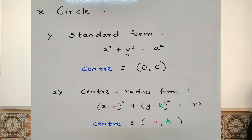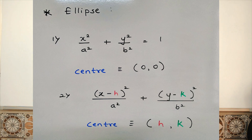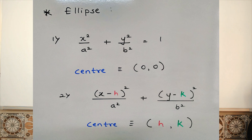We all know the center of a circle in the standard form is (0, 0), right? Then the center of a circle in the center-radius form is (h, k). In case of an ellipse, the center in the standard form is (0, 0), and the center in the form (x−h)²/a² + (y−k)²/b² = 1 is nothing but (h, k).